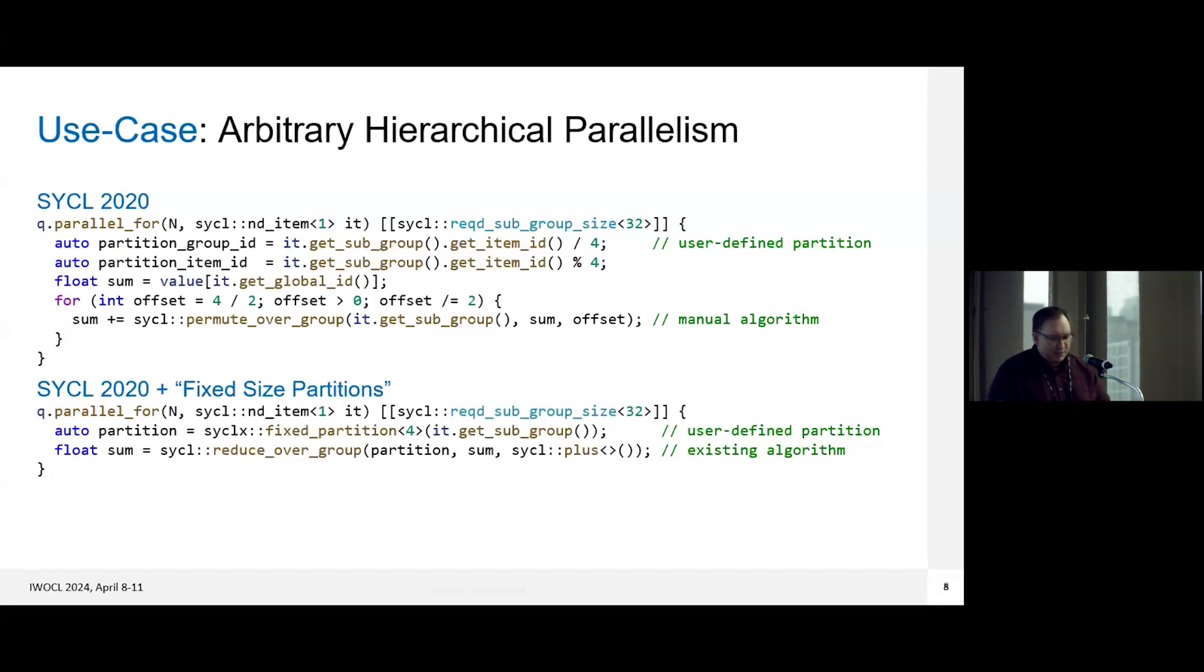So in this simple example, we introduce a notion of a fixed size partition of size four, and then we can perform the group reductions over these partitions of four items. And these fixed size partitions can be very useful in particular applications where the application may need to deal with a certain number of elements at a certain point. So one comparison to the hierarchical parallelism that exists in SYCL today is that the current SYCL hierarchical parallelism model is fixed. It just defines these two levels, and that's it. But with these fixed partitions, they have an advantage that you can partition a partition, so you can keep going and create your own arbitrary hierarchies. And it's all expressible inside the ND range model.